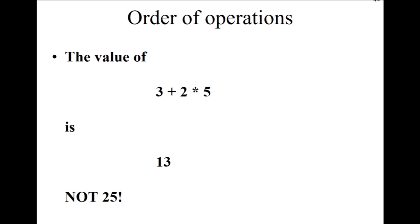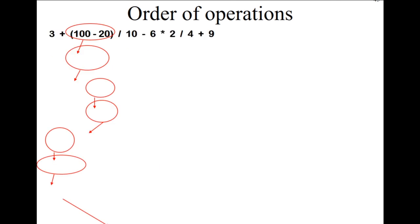For example, in the expression 3 + 2 × 5, you solve multiplication first: 2 × 5 = 10, then add 3 to get 13 — not 25. You cannot add 3 + 2 first because addition has lower priority than multiplication. Here's a more complex example: 3 + (100 − 20) ÷ 10 − 6 × 2 ÷ 4 + 9, which uses multiple operations in one formula.